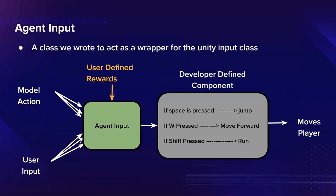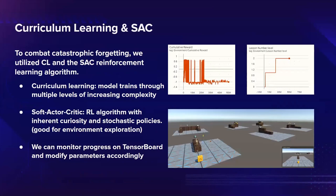Another feature we implemented early on was the agent input class, a class we wrote to abstract the process of taking input, either from the user or from the model. This class also allows the user to easily define any rewards or punishments they wish to add — for example, gaining a reward based on coin collection or being punished for taking too long to finish the level.